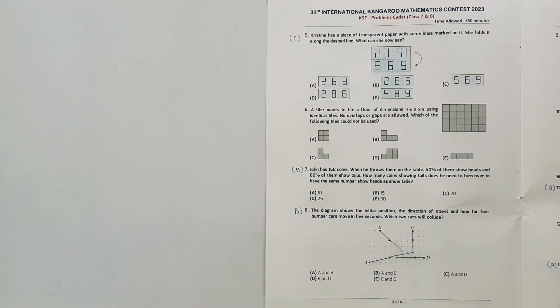The question shows John has 150 coins. When he throws them, 40% of 150 shows heads and 60% of 150 shows tails. How many coins does he need to turn over to have the same number of heads and tails? So first we will find 40% and 60% of 150.